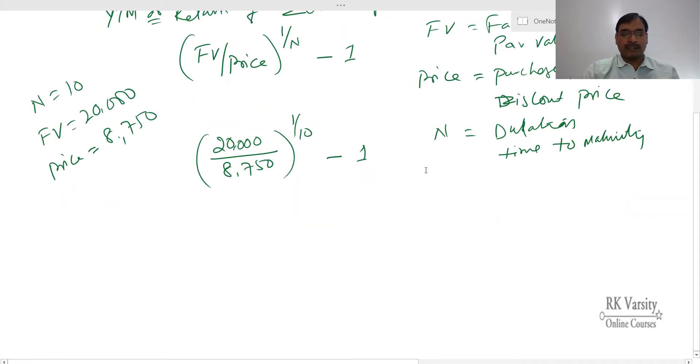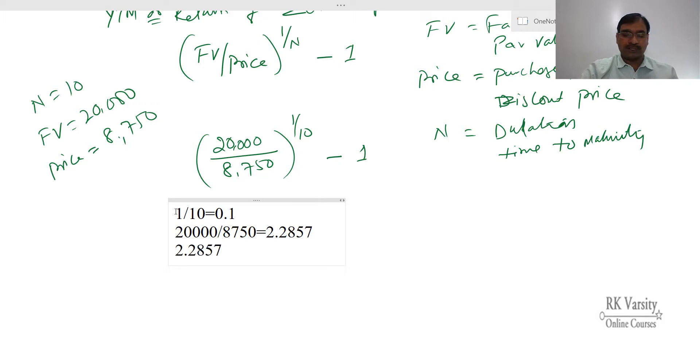So we will calculate this. First we calculate 1 upon 10. Next, face value upon price, that is 20,000 upon 8,750. Next, 2.2857 - this is the value that we got for face value upon price. Then this raised to the power of 1 upon N, that is 0.1.